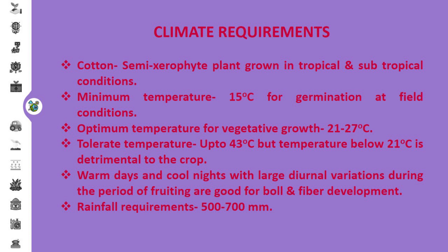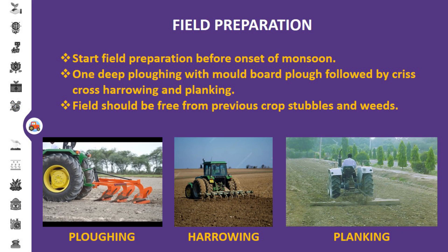In climatic requirements, cotton is a semi-xerophyte plant grown in tropical and sub-tropical conditions. The minimum temperature requirement for cotton germination at field condition is 15 degree Celsius. The optimum temperature for vegetative growth is 21 to 27 degree Celsius. This crop can tolerate temperature up to 43 degree Celsius, but temperature below 21 degree Celsius is detrimental to the crop. Warm days and cool nights with large diurnal variations during fruiting are good for boll and fiber development. The rainfall requirement for cotton is 500 to 700 mm.